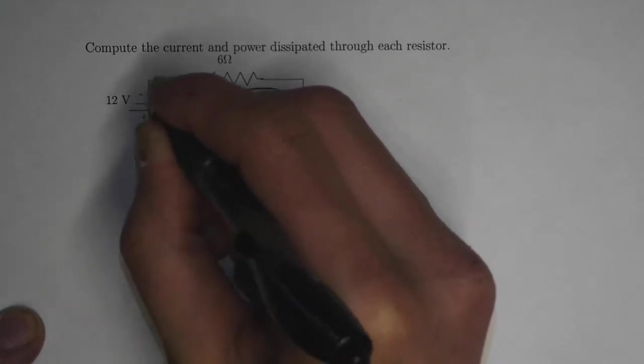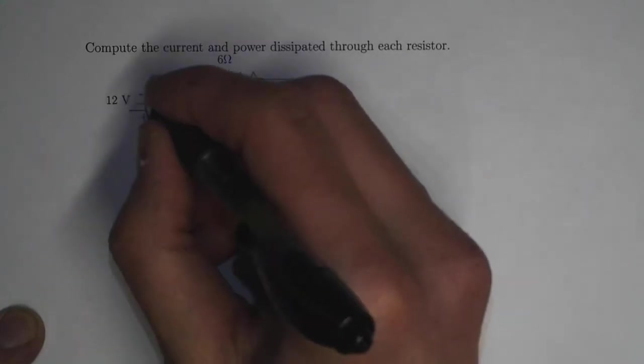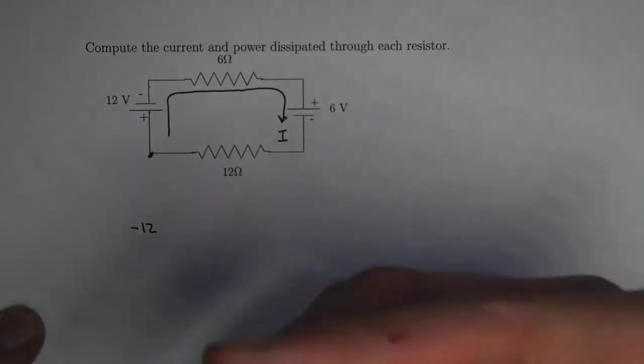As it goes up across, this will have a drop of minus 12 volts. If it is going the opposite way, then it will have a plus sign.